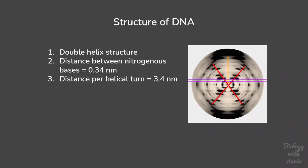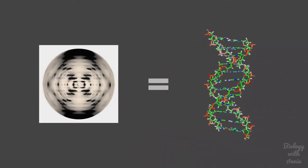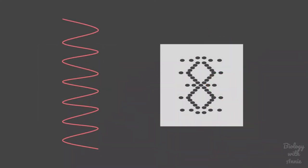First, they understood that DNA is a double helix where two polynucleotide chains are arranged with their nitrogenous bases projecting into the center of the helix. Now you're probably wondering how can one make such a conclusion after looking at this image? Well, helical structures create a characteristic X-shaped diffraction pattern.